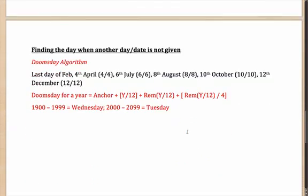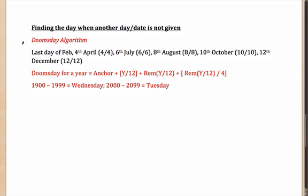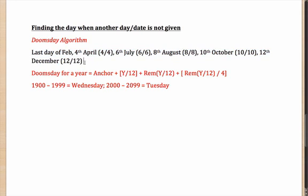Now let's look at something more interesting — the Doomsday algorithm. It allows you to find the day of any particular date, like 17th March 1924. You need to remember that the last day of February, 4th April, 6th June, 8th August, 10th October, and 12th December all occur on the same day of the week. Remember it as 4-4, 6-6, 8-8, 10-10, 12-12. That particular day is called the Doomsday.